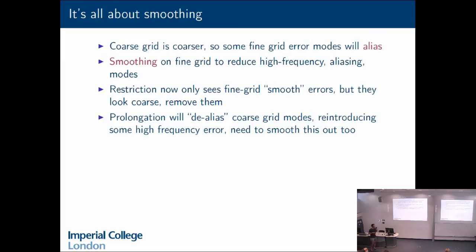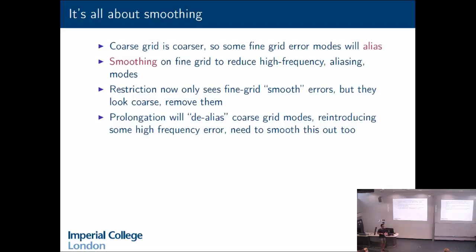A lot of multigrid is about getting your smoothers right. Your coarse grid is coarser, so some fine grid error modes will alias. When I restrict, the coarse space is smaller, so I have some modes in the fine space that will overlap when I go to the coarse space. But if I've removed the high-frequency modes, the alias won't appear on the coarse grid when I restrict because they weren't there on the fine grid to begin with. So I see a smooth error, but on the coarse grid it looks a bit jumpier, so I can smooth it again. Then I do some prolongation, which in some sense de-aliases the coarse grid modes — it reintroduces some high-frequency error, and I'll need to smooth this out as well.